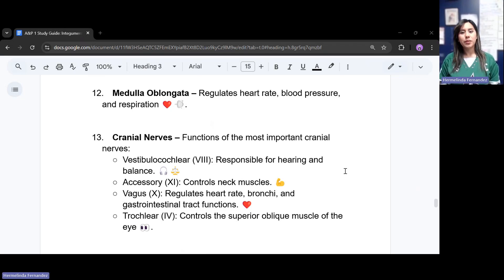Now make sure you know your cranial nerves. The function of the most important cranial nerves that you will be asked in this midterm. You have the vestibulocochlear, responsible for our hearing and our balance. The accessory controls all of our neck muscles. The vagus regulates the heart rate, the bronchi, and the gastrointestinal tract and functions. And the trochlear controls our superior obliques of our eyes.